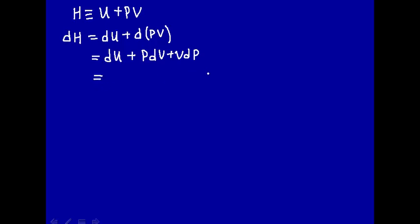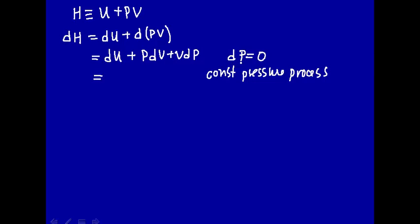Now we're going to make the assumption that this is a constant pressure process — we're going to transfer some heat into or out of the system under constant pressure. This is typical of what you do in thermodynamics: you start with some general idea and work it, then you start applying some restrictions and you get some fairly useful equations. So a constant pressure process implies that dP is equal to zero. P won't change, so dP will be zero and that term goes away. So now we have the differential dU plus P dV.